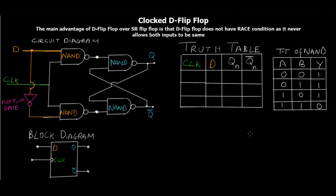We'll understand how the clocked D flip-flop is different from the clocked SR flip-flop, go through each of its cases, and construct the truth table. As you can see on screen there are four NAND gates in a clocked D flip-flop arrangement. The first two NAND gates, shown in orange, are used with the clock. In the D flip-flop we only have one input, unlike the SR flip-flop where S and R were two separate inputs.